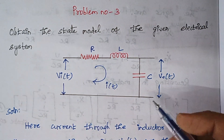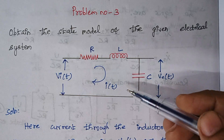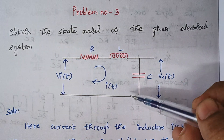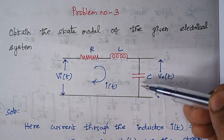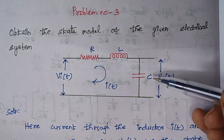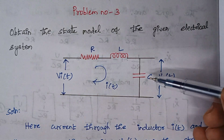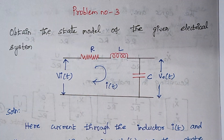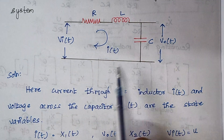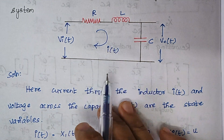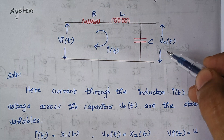This is our given system. This system has two energy storage elements — one is an inductor and another one is a capacitor. So here we have to consider two state variables. The state variables are the current flowing through the inductor, I(t), and the voltage across the capacitor, designated as V0(t).